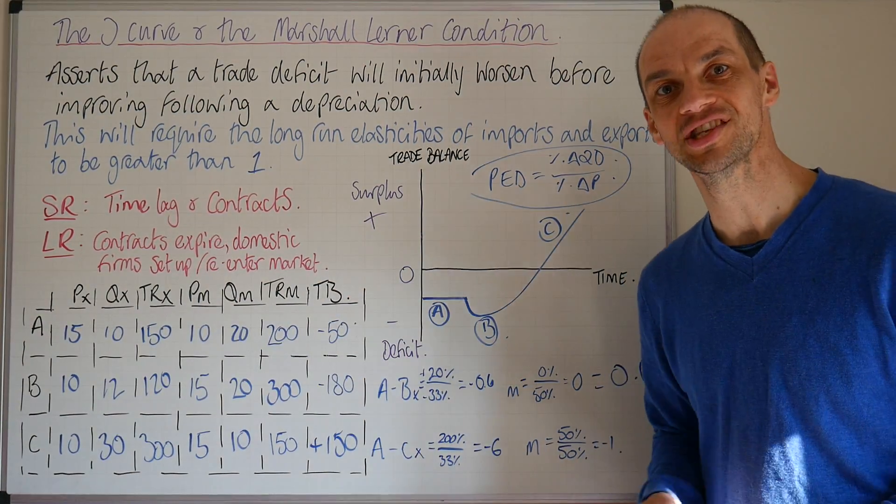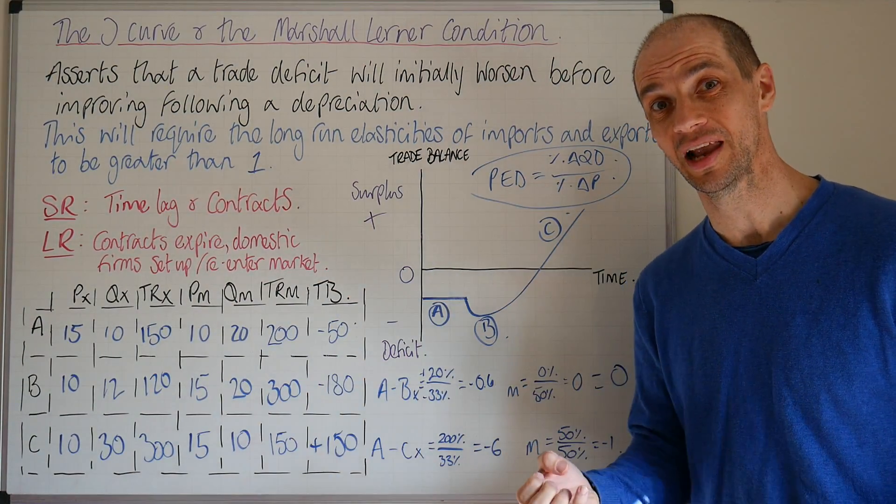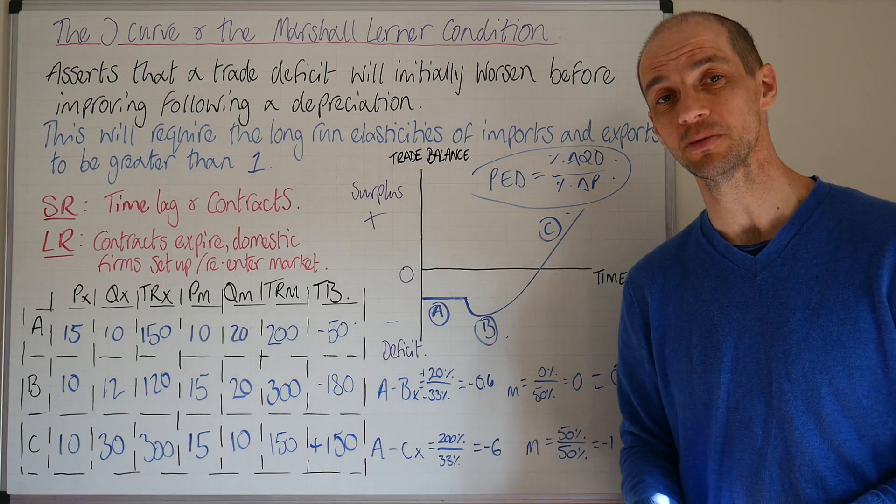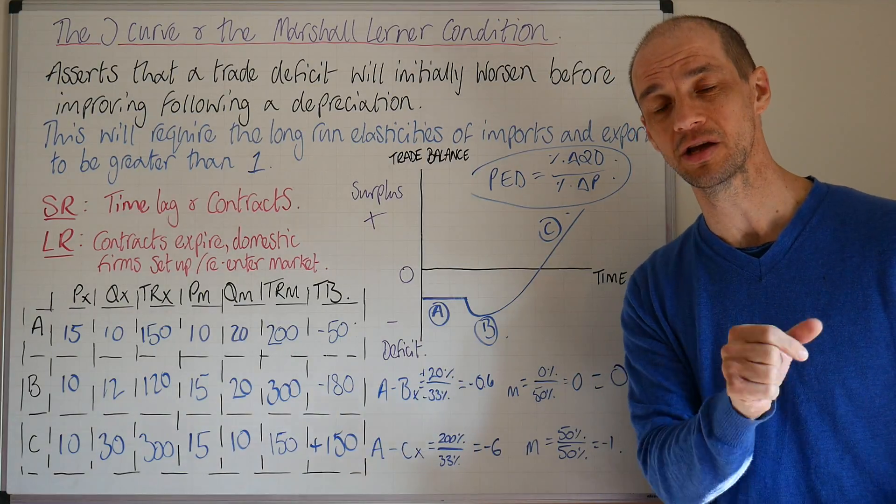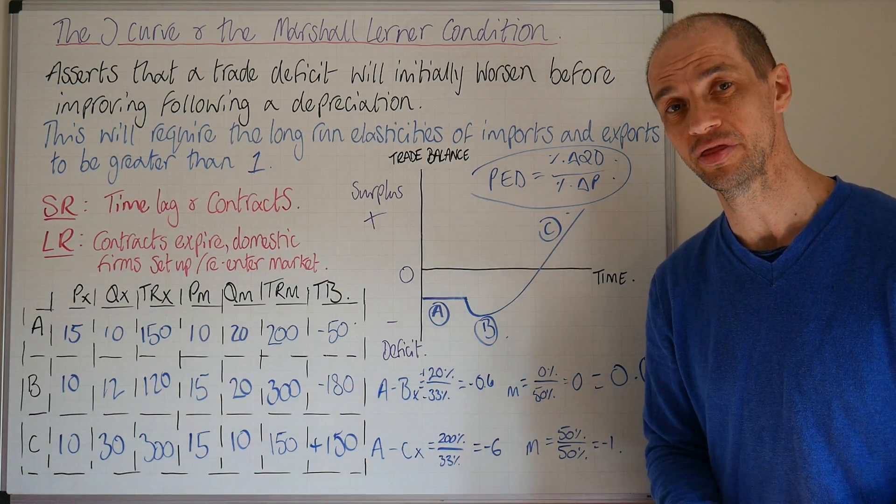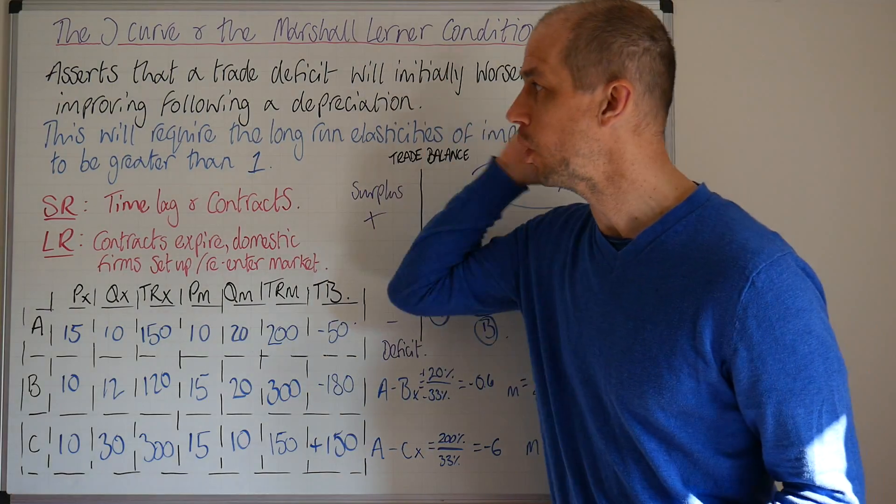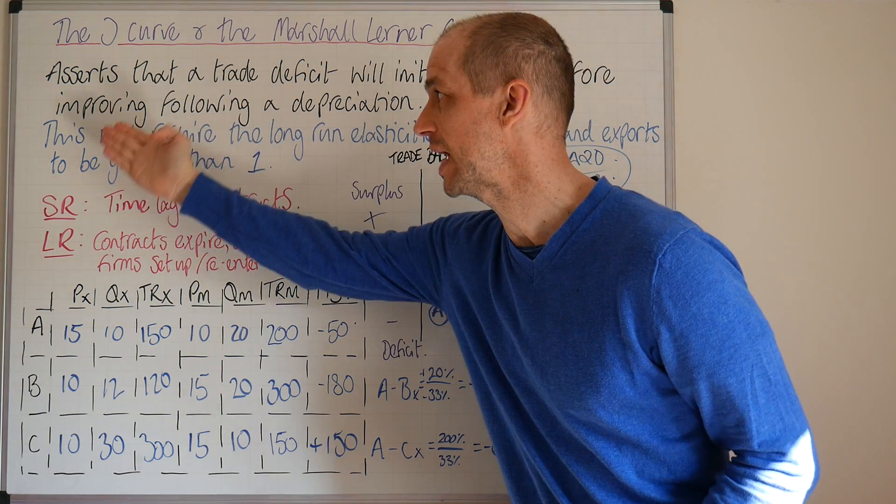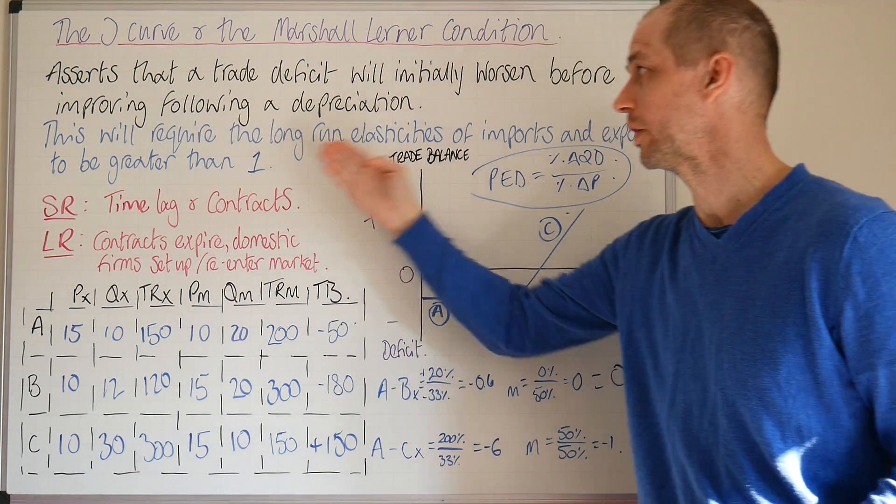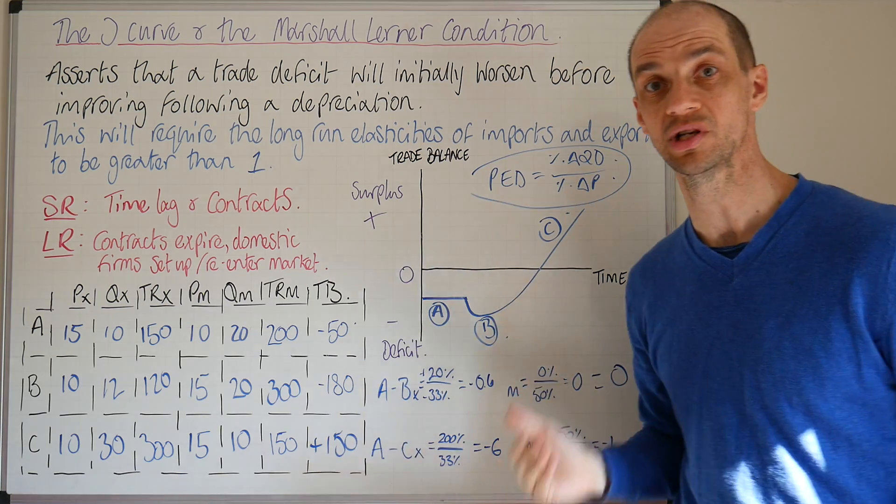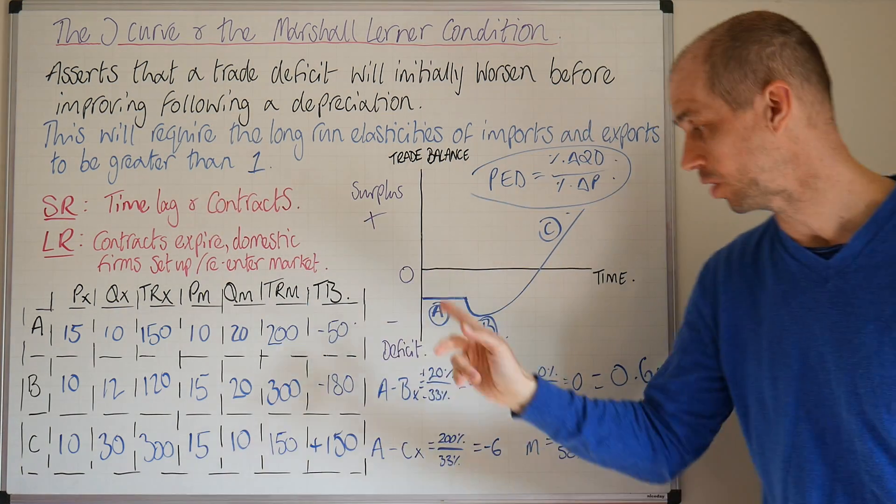Hi everyone, let's now take a look at calculating our elasticities of demand and look back over the theory we covered in year 12 so we can really back up what the Marshall-Lerner condition says about the fact that it will require the long-run elasticities of imports and exports to be greater than one.